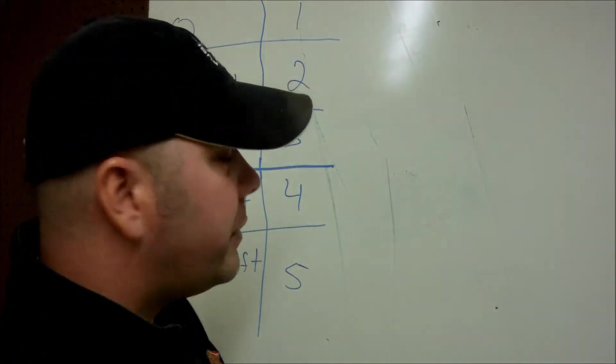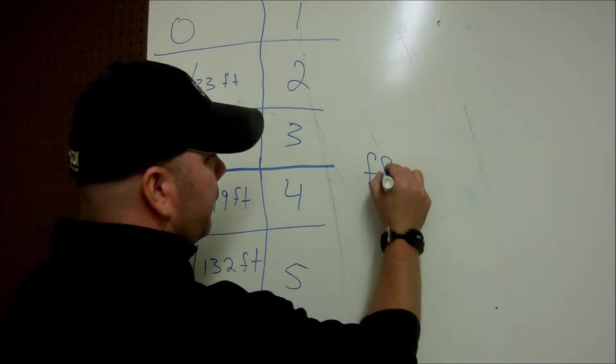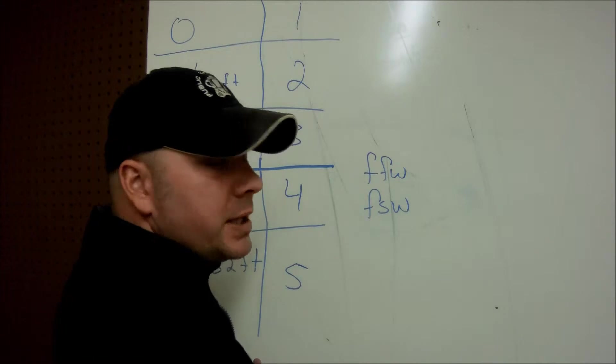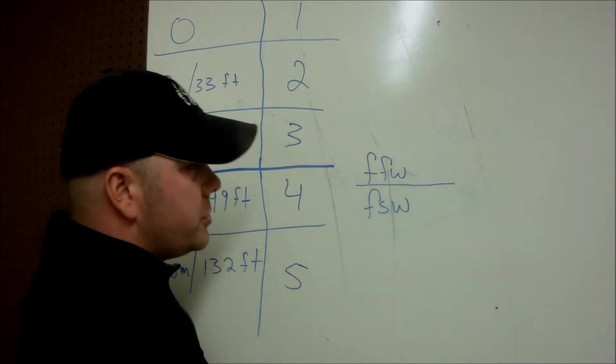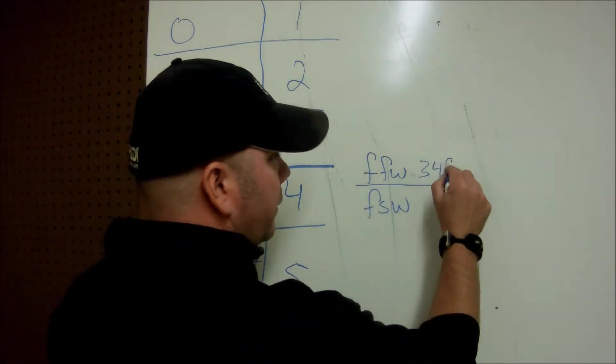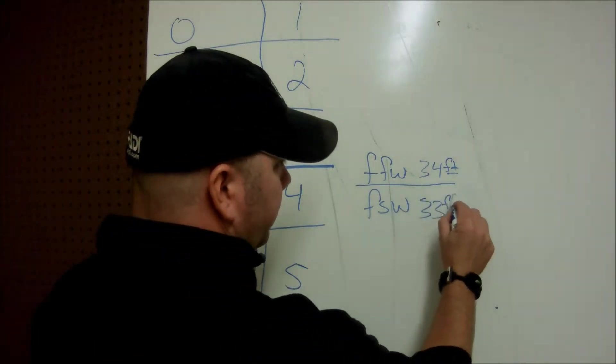The first thing that we're going to look at though is we have to remember that when we talk about feet of fresh water and feet of salt water, there is a big difference between the two. When we talk about atmospheric pressure and fresh water, it's going to be measured every 34 feet and salt water, it's going to be measured every 33 feet.